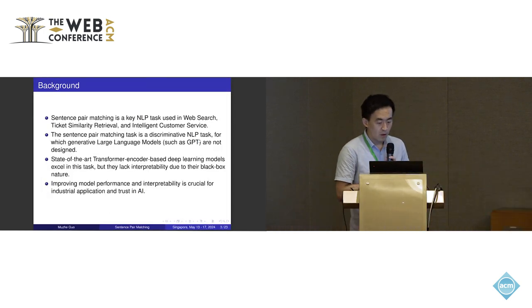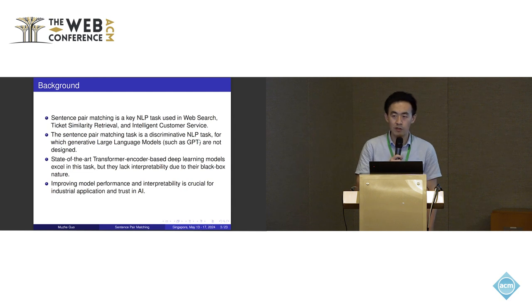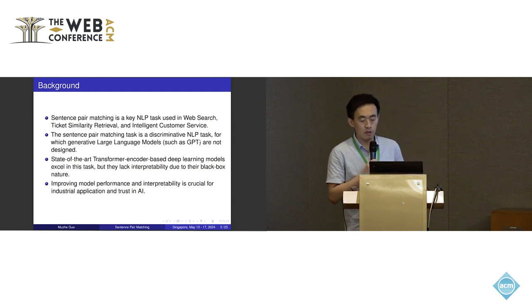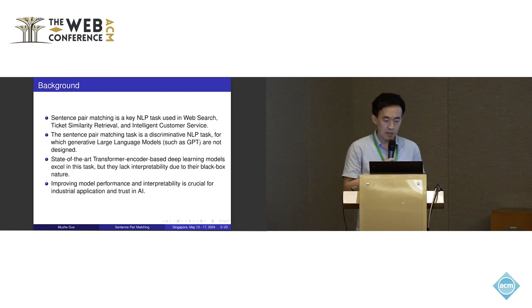Let's look at background. Sentence Pair Matching is a task used in web search, similarity retrieval and intelligent customer service. The sentence pair matching task is a discriminative task, for which generative large network models are not designed. Even though GPTs are more and more powerful, it's very hard and very costly for small businesses to deploy such big models.